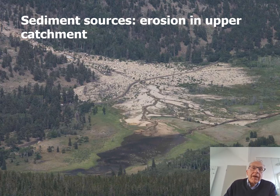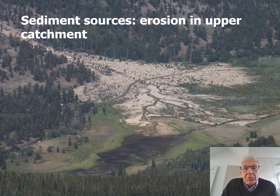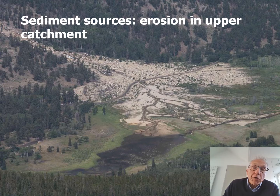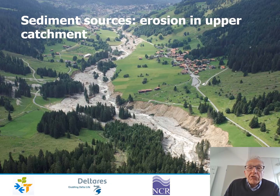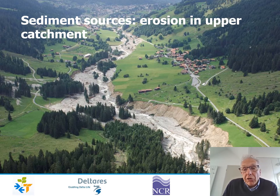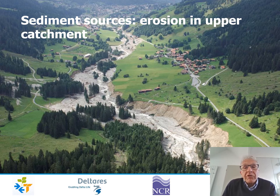Where does sediment come from? Sources are in the upper parts of the catchment, due to erosion, mass wasting, mountain slopes, and landslides where the material ends up in the river. Also, rivers in the highlands erode — they incise and thus generate sediment for transport downstream.